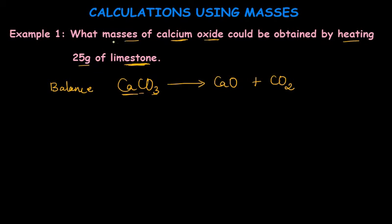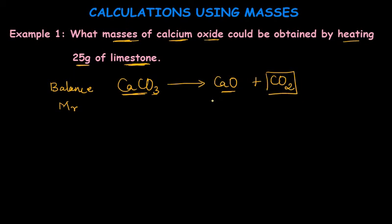Since the question involves masses, we need to calculate the relative molecular masses of the relevant compounds: calcium carbonate and calcium oxide. We can ignore carbon dioxide as no data is given for it. If you don't know how to calculate relative molecular mass, see my first video on the mole concept. The molecular mass of calcium carbonate is 100 g and calcium oxide is 56 g.